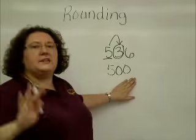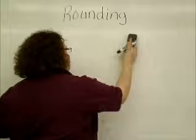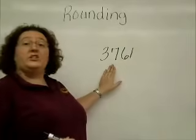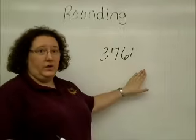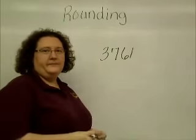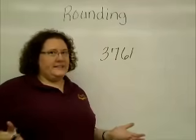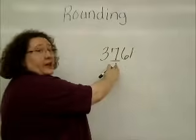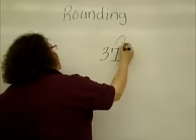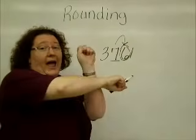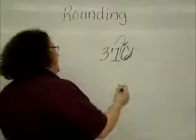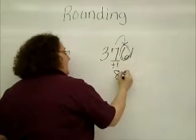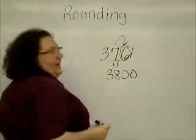Here's another one for you to try, except this time it's going to have four digits. Round three thousand seven hundred sixty-one to the nearest hundred. Pause the video and then come back and check your answer. Ones, tens, hundreds, thousands. I need the number in the hundreds place because I'm rounding to the nearest hundred. Going right next door to the six — six tells me I have to add one more to my number, the seven, so it becomes an eight. The six and the one behind it become zeros. And the three in the front drops down.